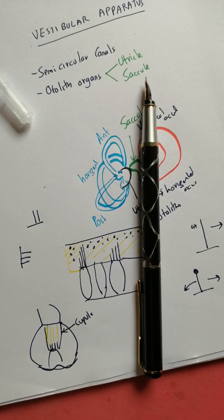So if we have the horizontal semicircular canal, that will sense the rotation in that plane. Similarly, we can have rotation in different planes.